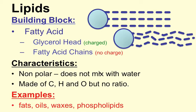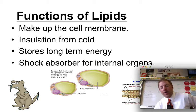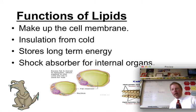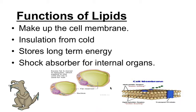Functions of lipids: they make up the cell membrane — that's what these phospholipids are. They provide insulation from the cold; larger animals like those in the Arctic have layers of blubber, which is fat, that helps insulate them. Lipids store long-term energy, which is really the whole point of having fat. They also act as a shock absorber — you could never have zero body fat because your organs would be at risk. Your kidneys, located in your lower back, have no bone to protect them, so there's a layer of fat around them. The same is true of your heart. Having that little bit of fat to help protect internal organs is not necessarily a bad thing.